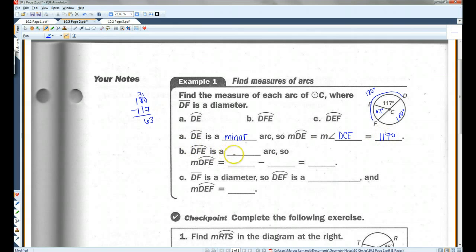DFE is a major arc. So, the measure of arc DFE, notice how the major arcs have three letters. That's how you know it's a major arc versus a minor arc. The minor arcs will only have two letters. The major arcs will have three letters. So, the measure of arc DFE is 360 degrees minus 117, which is 243.